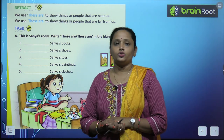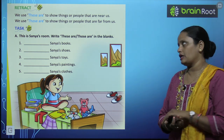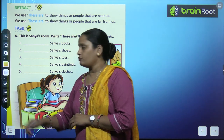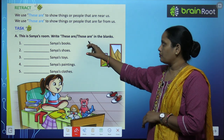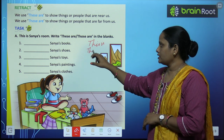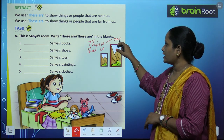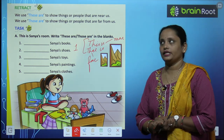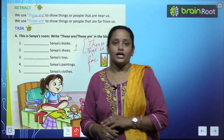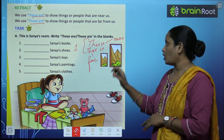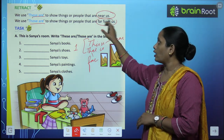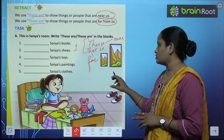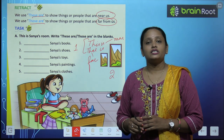We use 'these are' to show things or people that are near to us (humare paas hain), and we use 'those are' to show things or people that are far from us. We previously read a chapter on 'this is' and 'that is' — 'this' was for near objects and 'that' for far objects, and both referred to only one thing. Here we are reading 'these are' and 'those are,' which are used the same way but for plural — two or more things.